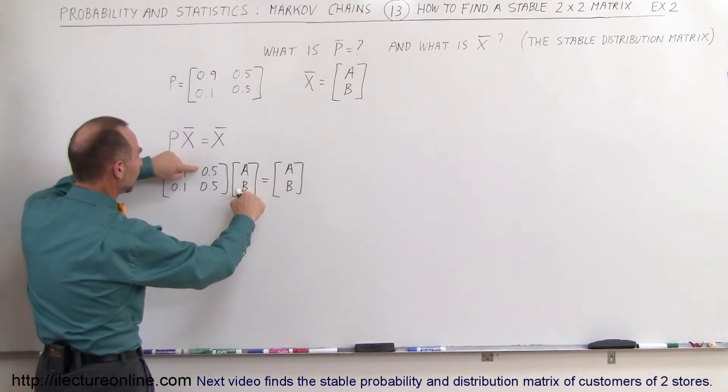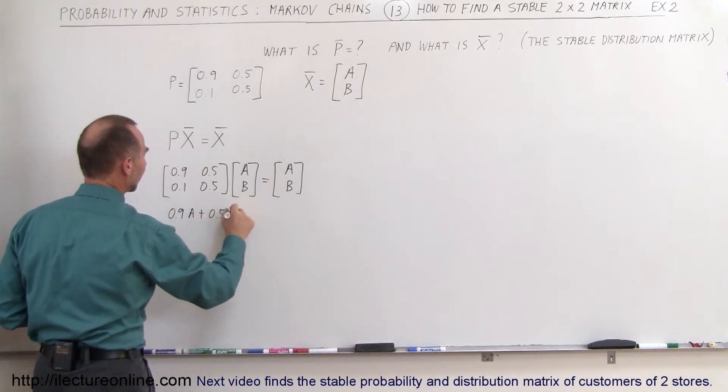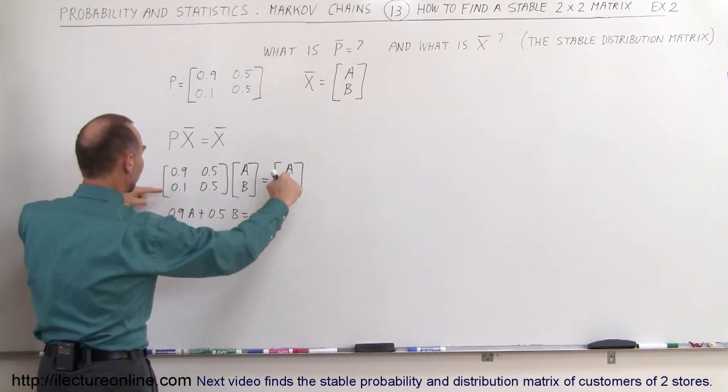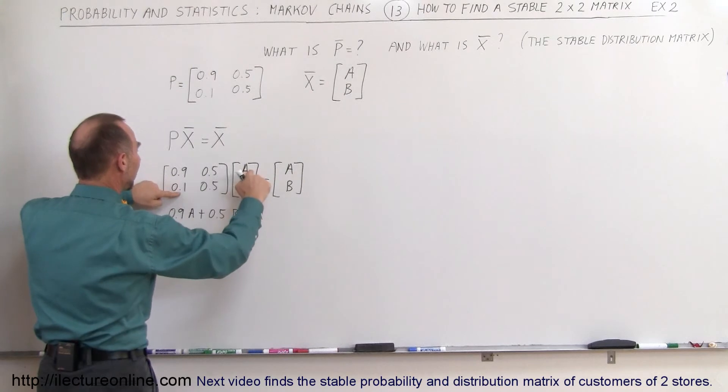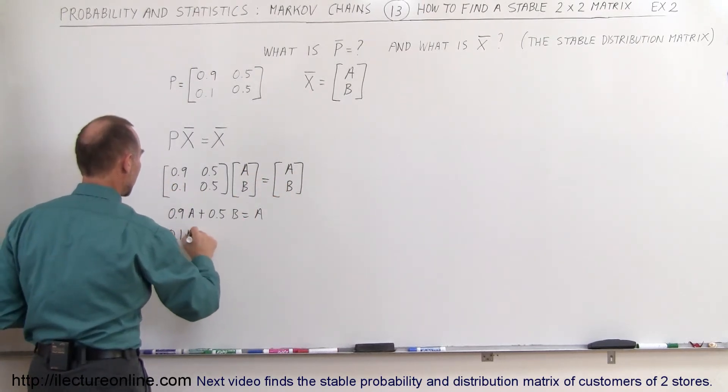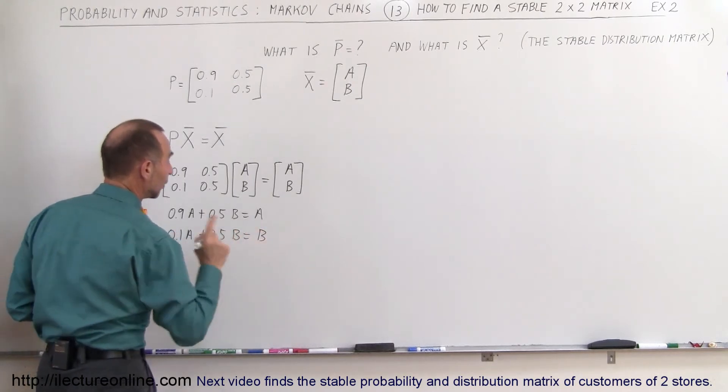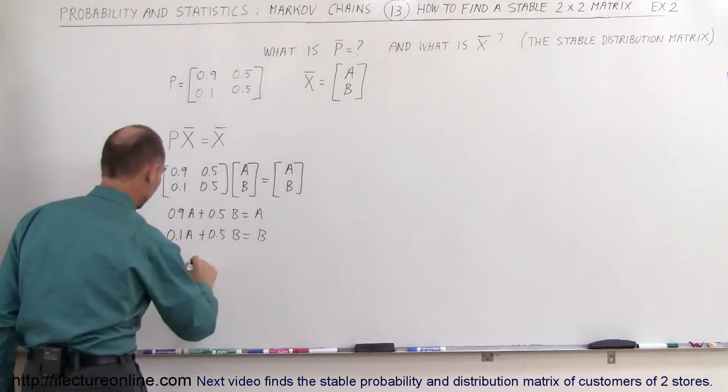So it's 0.9 times A plus 0.5 times B equals A. And then the second row: 0.1 times A plus 0.5 times B equals B. And of course you also realize that A plus B must equal 1 as well.